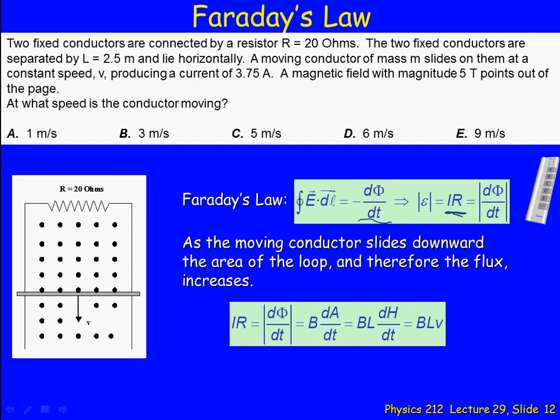The flux is B·A. Since the magnetic field isn't changing, what's changing is the area. So the change in flux is the constant magnetic field times the rate of change of area with respect to time.